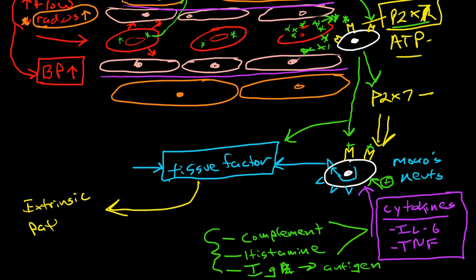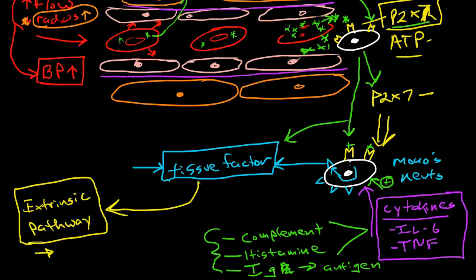So that explains the way that the extrinsic pathway can be initiated by inflammation without cellular injury. This is an area of very active research right now, because if we can figure this out, then it's possible we may be able to block inflammation that is causing hypercoagulation in diseases like coronary artery disease.